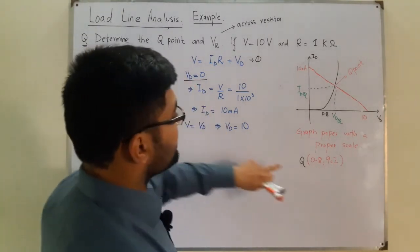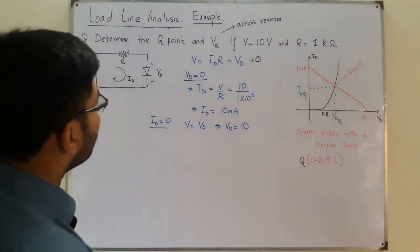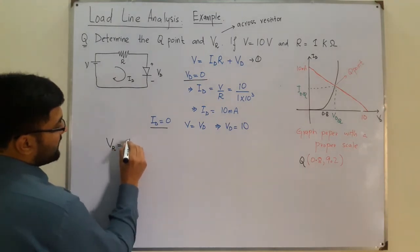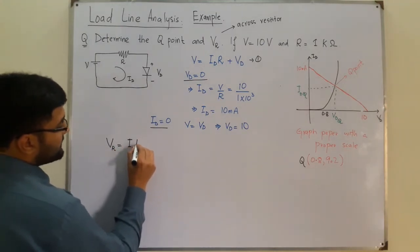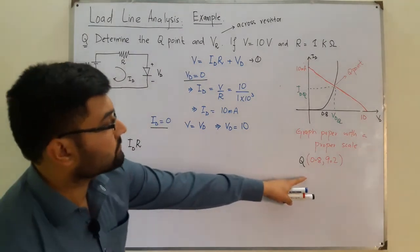The second part: we know that from Ohm's law, VR would be equal to I into R, which is ID into R. We take the Q current, so this is 9.2.